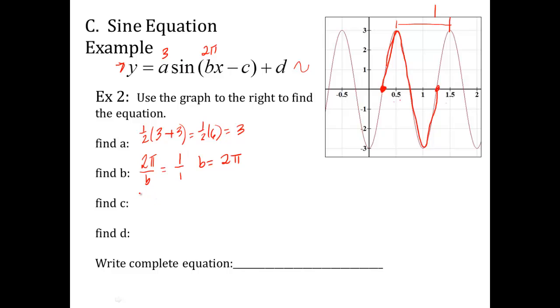To find C, remember you take Bx minus C equals zero. Well, B is two pi. X, remember, is the X value where your segment starts. So right here, it's between 0 and 0.5, which makes this 0.25, also known as 1 fourth. Minus D equals zero. So two pi times 1 fourth, that's really two pi over four, which is pi over two. So C is pi over two.